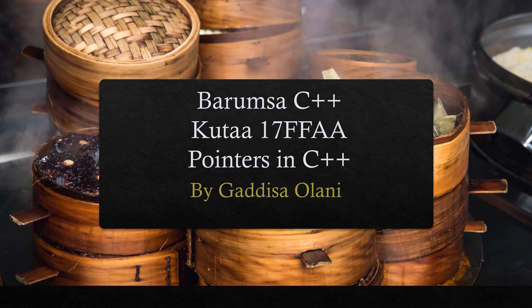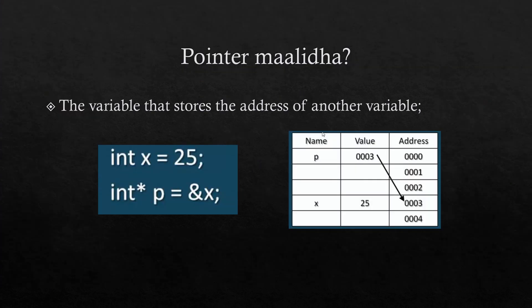A pointer is a variable that stores a memory address of another variable. There is a value, but I will come back to store it — so for now, the variable is that.